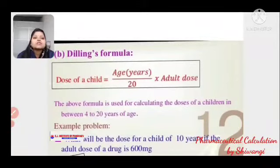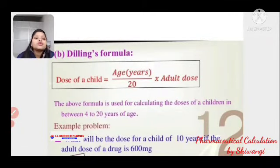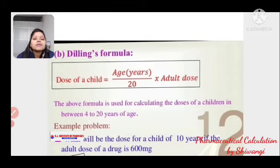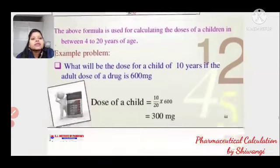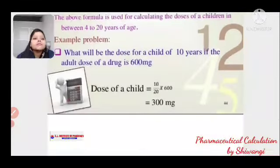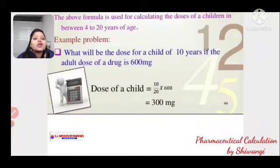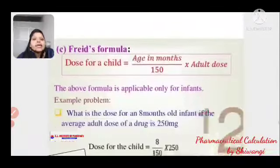Dilling's formula is used for children aged 4 to 20 years: Dose = Age / 20 × Adult dose. Example: Age = 10 years, adult dose = 600 mg. Dose = 10/20 × 600 = 300 mg.